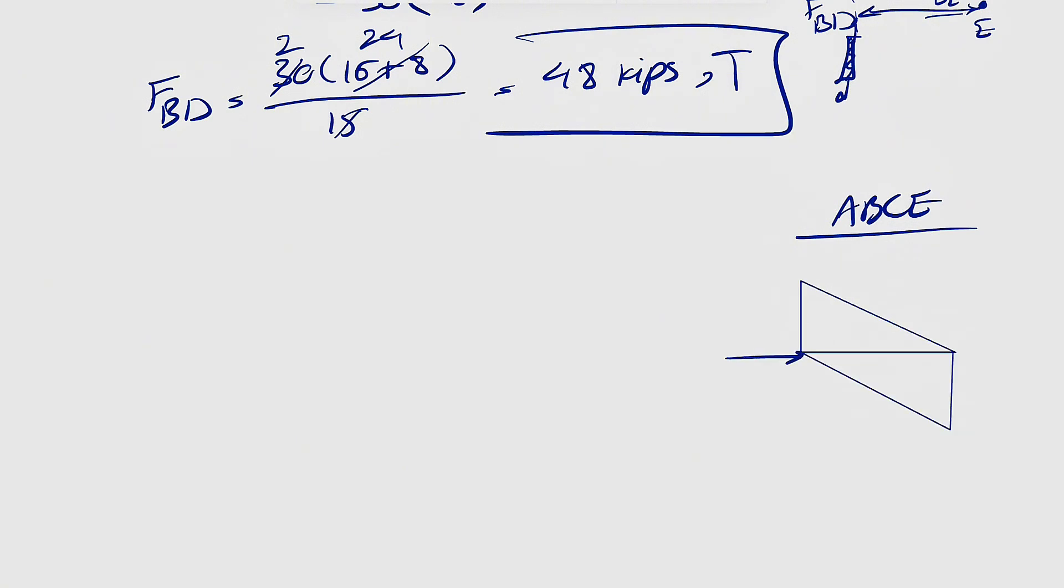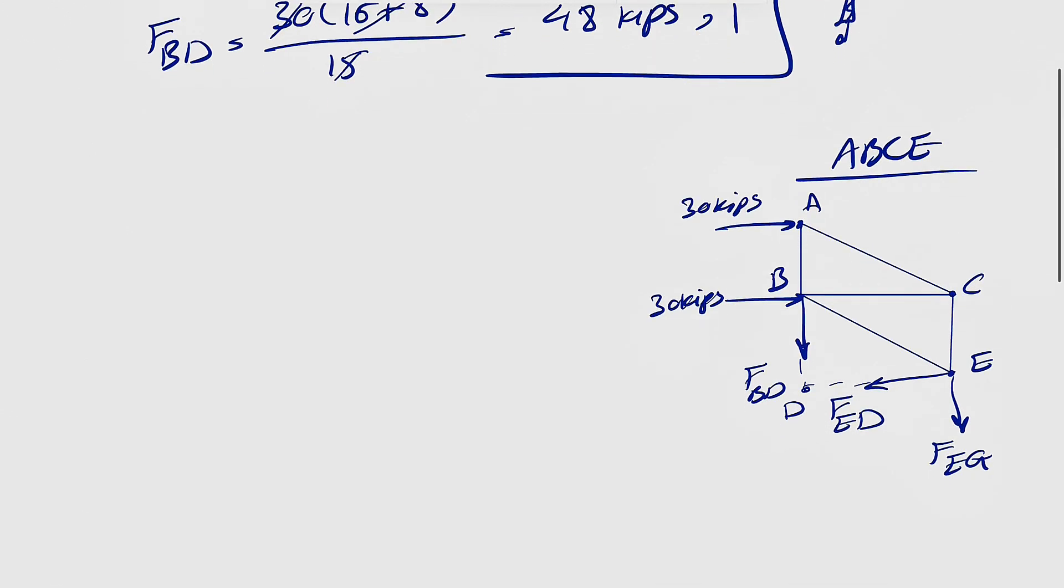We're going to have the 30 kips in here, 30 kips at A, 30 at point B. We're going to have one force in here, which was our FBD. And here, this is our point C, this is E. And we're going to have two forces in here. One in here, it's going to be EG, and this one is going to be FE. So the one that we are interested in, and these two are going to cross each other at point D, the one that we're interested in here is FED.